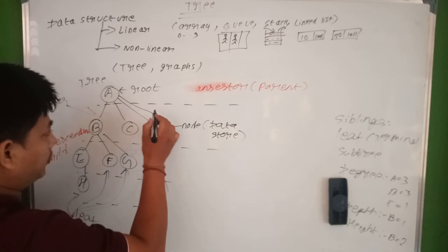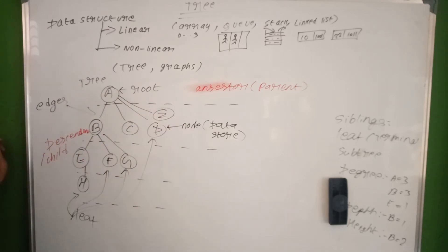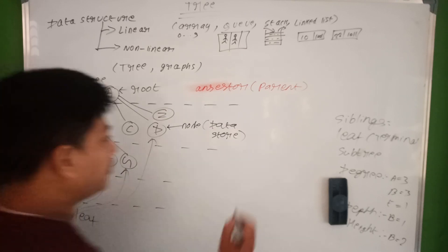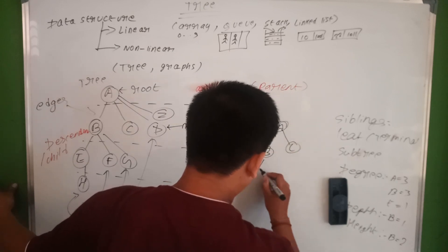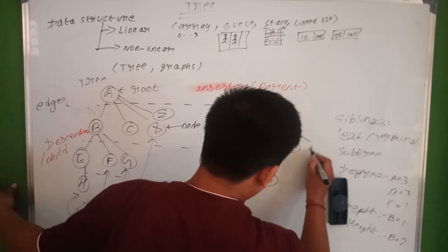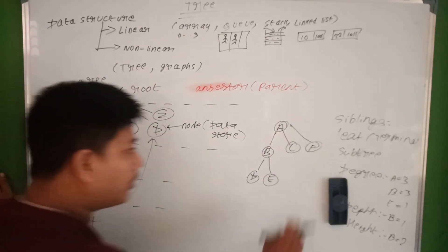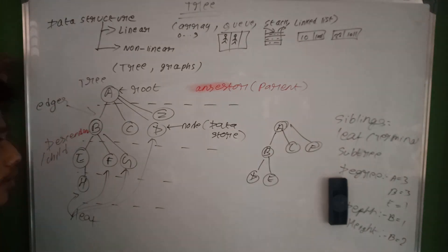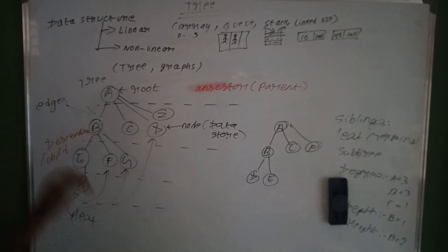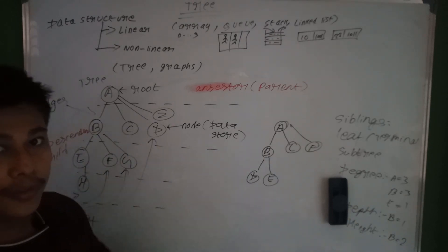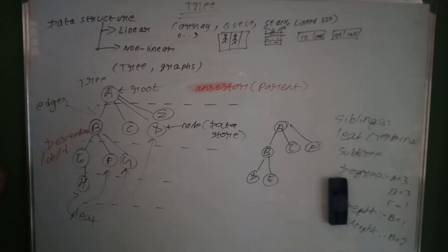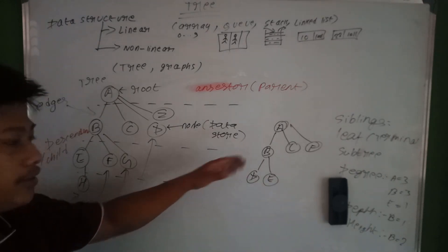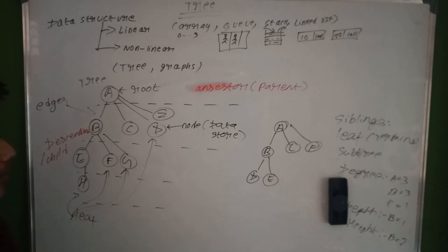Now you can see a normal tree and a binary tree here. In a binary tree, each node has at most 2 children: for example A, B, C, D, and E. A normal tree can have an unlimited number of children, whereas a binary tree is limited to 2 children per node, which makes binary tree operations more efficient.